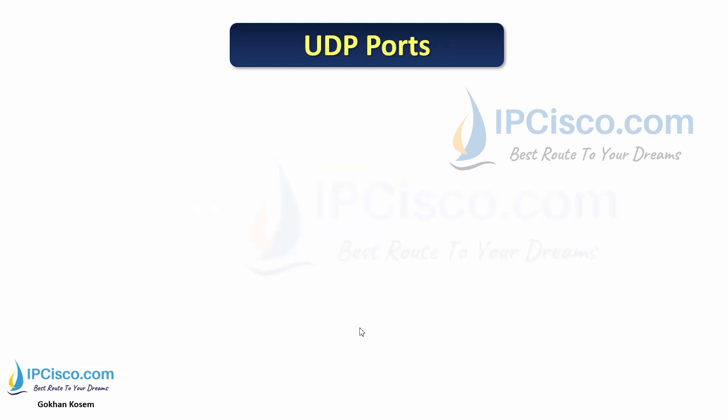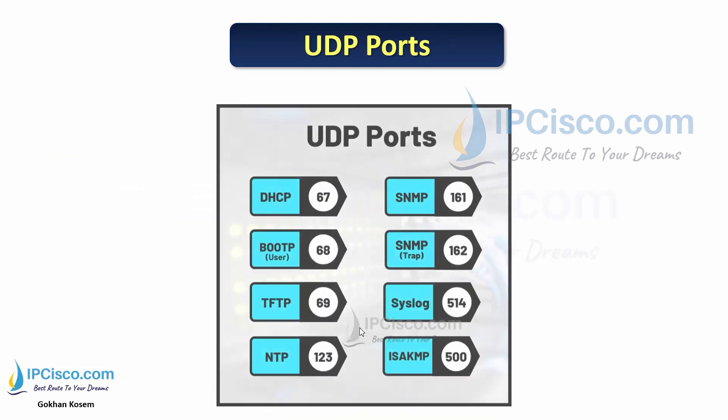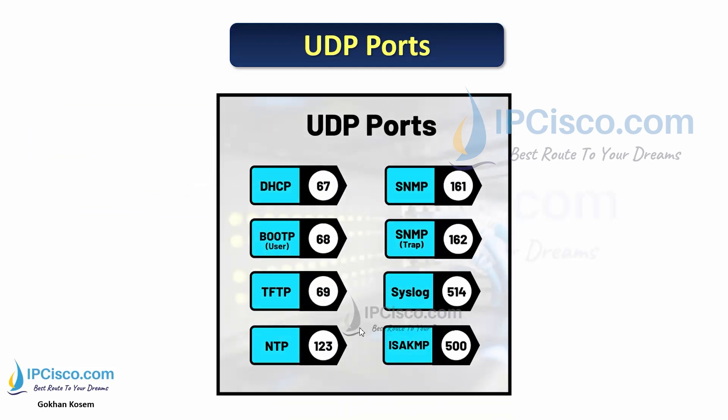Some applications use UDP ports. DHCP uses UDP port 67. BOOTP uses UDP port 68. TFTP uses port 69. NTP uses port 123. SNMP uses ports 161 and 162. Syslog uses port 514. And ISAKMP uses UDP port 500.